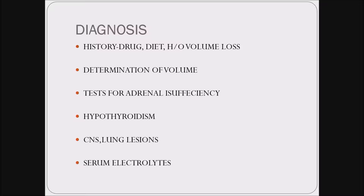How do you make a diagnosis? Diagnosis mainly depends on history, as I already discussed. Take the drug history — whether the patient is on any diuretics. Assess diet and history of volume loss. Look for signs of dehydration, check skin turgor, whether the mucous membranes are dry, and check for postural BP — whether there is any fall. Test for adrenal insufficiency like Addison's disease, hypothyroidism, lung lesions, and finally check serum electrolytes.